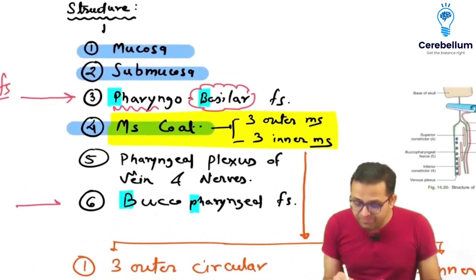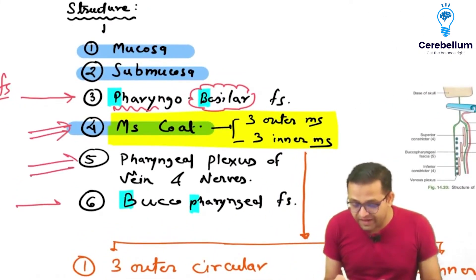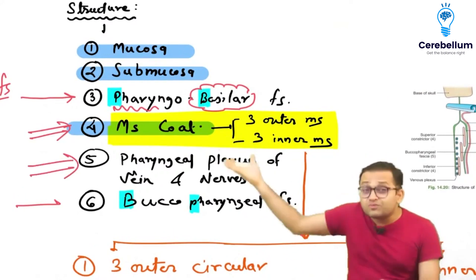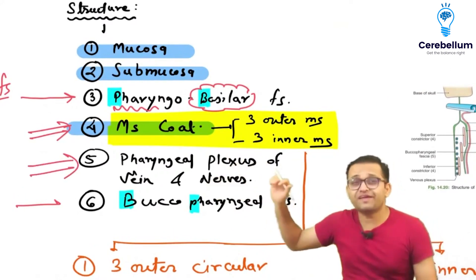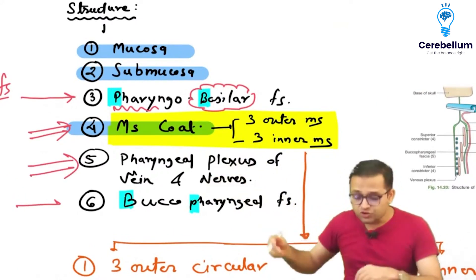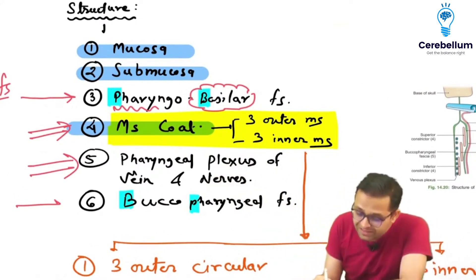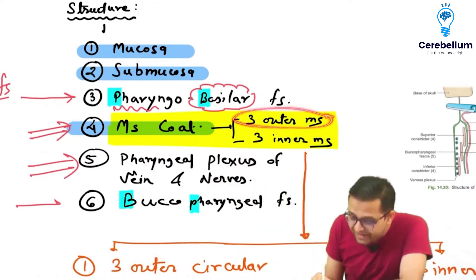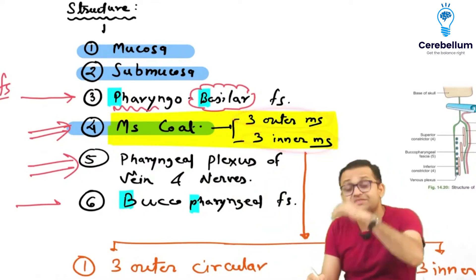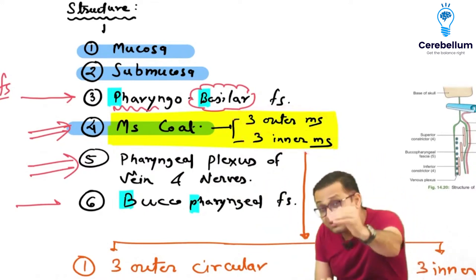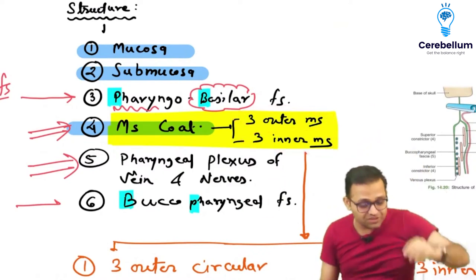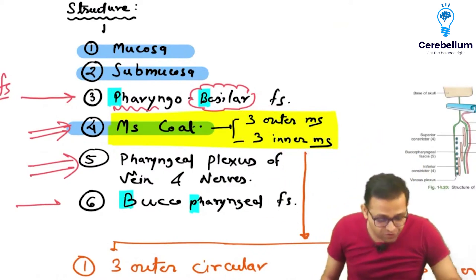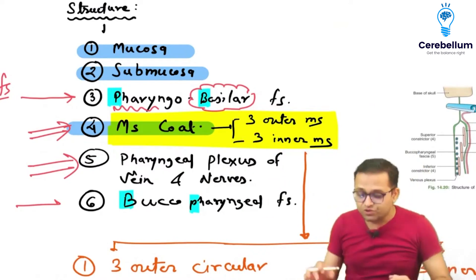In between the two fasciae there is the muscle coat, along with the nerve supply and blood supply of the pharynx. The muscle coat has three outer muscles and three inner muscles — six muscles total. These are the key points you need to remember.